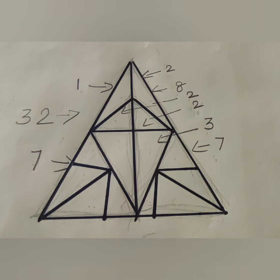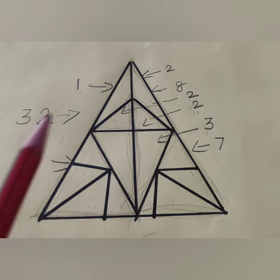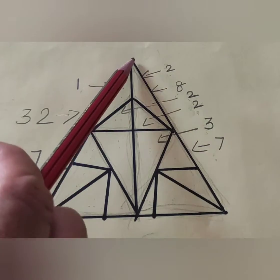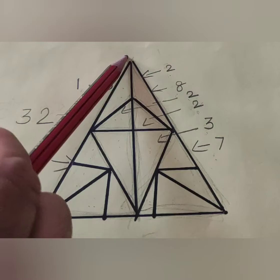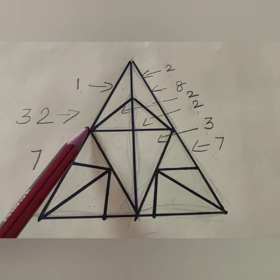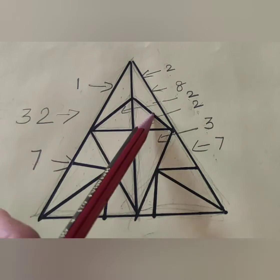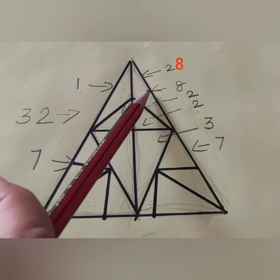Shall we count how many triangles are there? 1, 2, 3, 4, 5, 6, 7, then 8. 8 triangles are here.